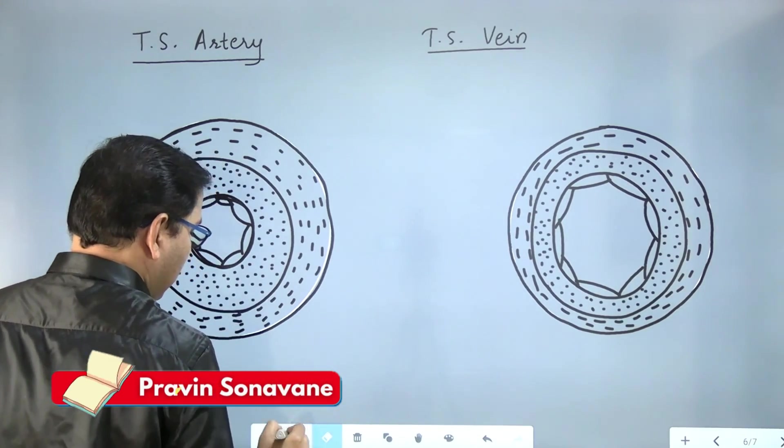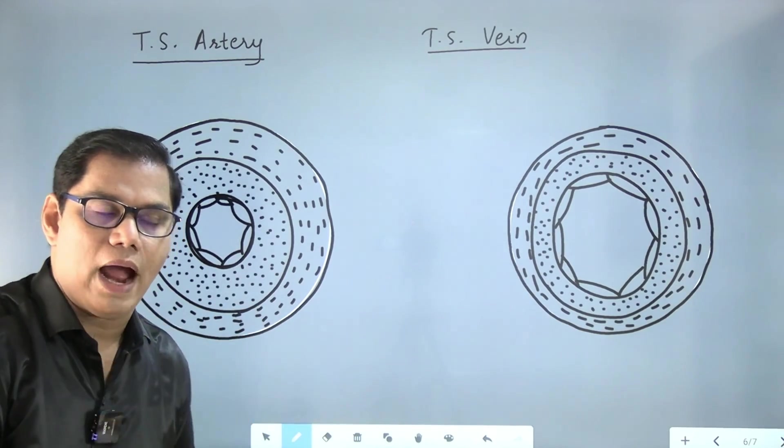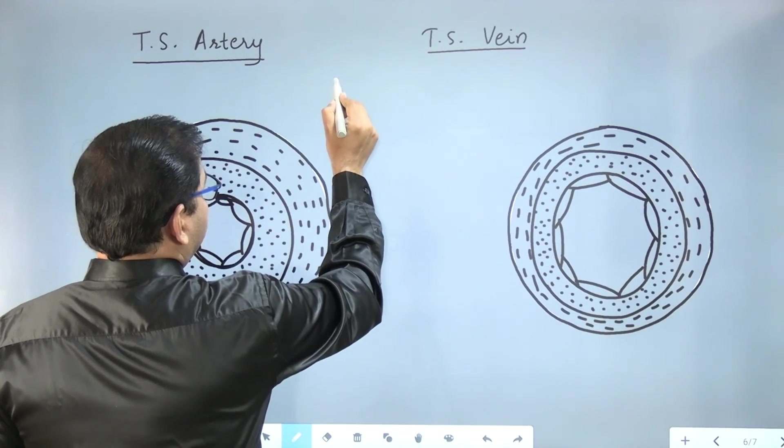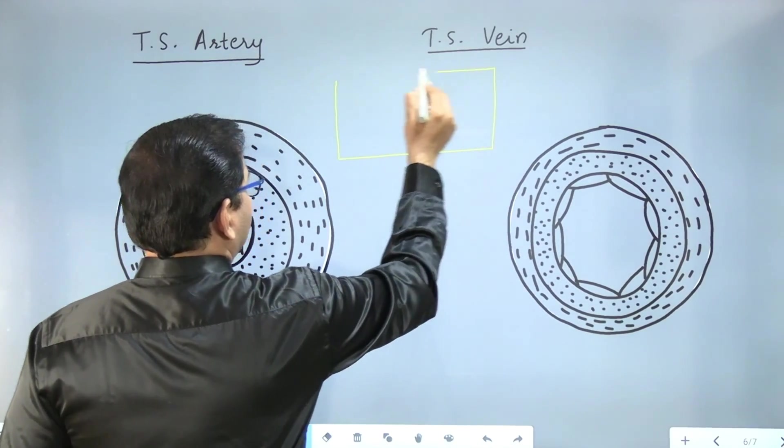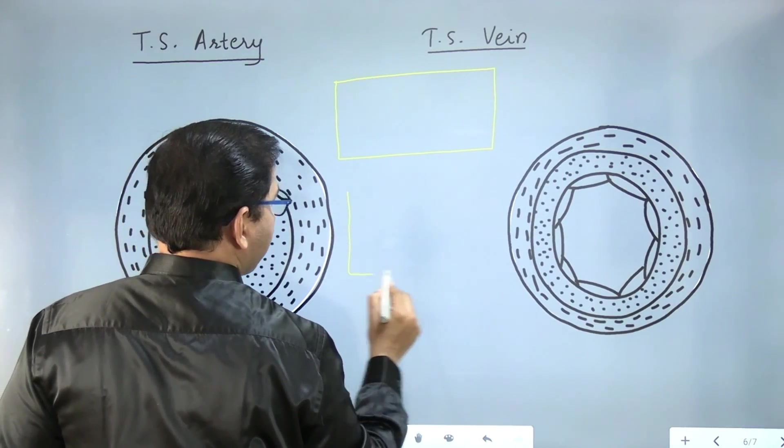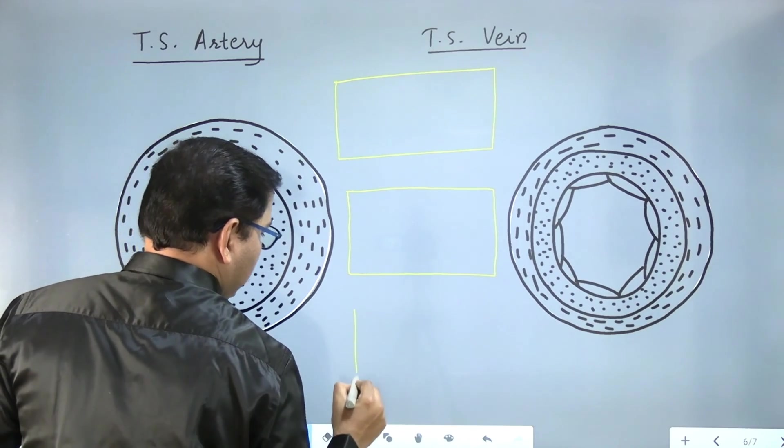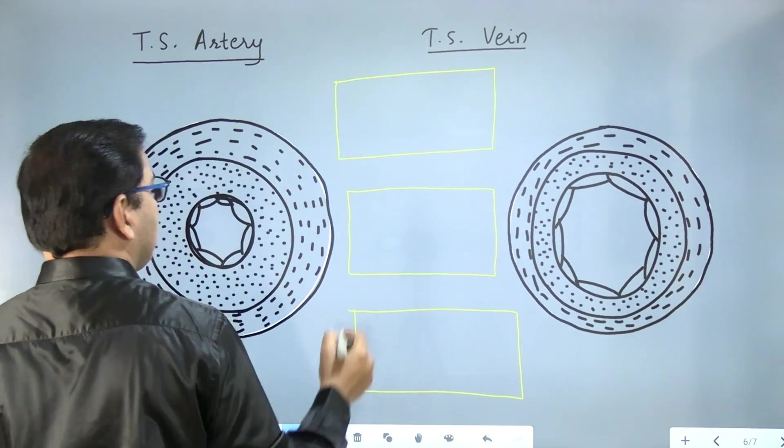Now it's time to label the diagram. Only this much of diagram, a very easy diagram. There are prominently three names. This box is for the first name, for the first layer or the outermost layer. Then for the second layer.